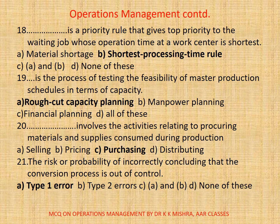21. There is a probability of incorrectly concluding that the conversion process is out of control. That is A. Type 1 error. B. Type 2 error. C. Both A and B. D. None. The correct option is A. Type 1 error.